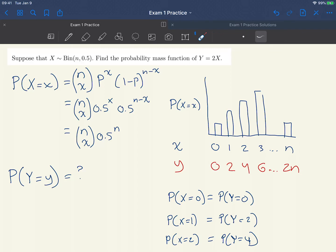If we look at what's happening, if we want to find the probability of Y equals something, it's just the same as the probability that X equals half that. To write that in symbols, the probability that Y equals y is the same as the probability that X equals y over 2.